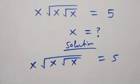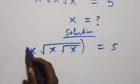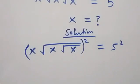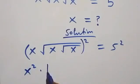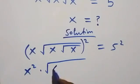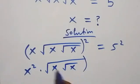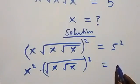From here, let's square both sides. We square this side and also we square this side. The square affects x, so we have x squared, then times square root of x, also squared, which equals 5 squared — that is 5 times 5, which is 25.